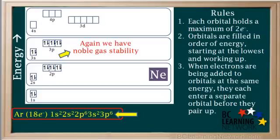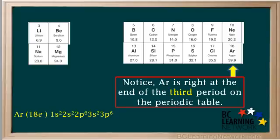Again, we've achieved noble gas stability, and we can add the symbol for argon here. Notice that argon is on the end of the third period of the periodic table, right below neon, that previous atom with noble gas stability.